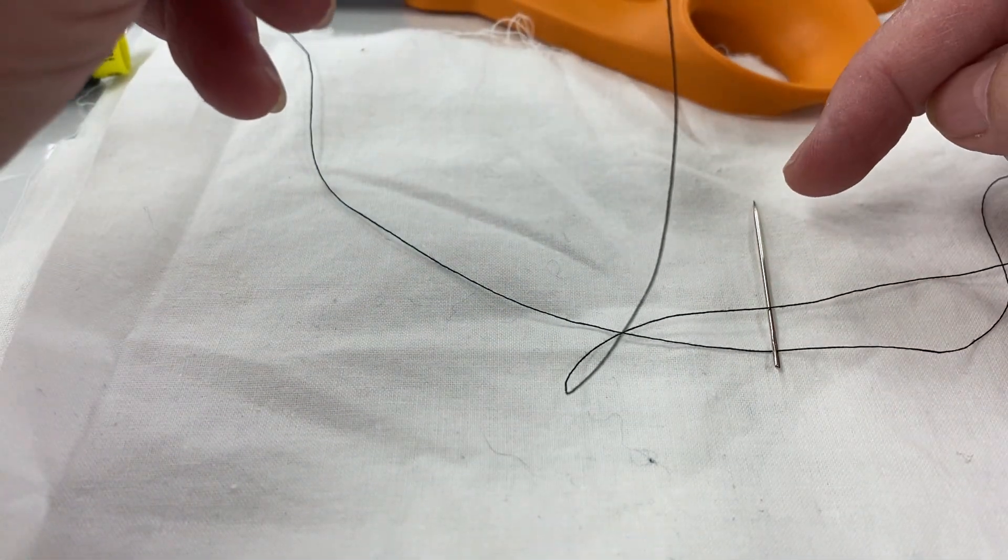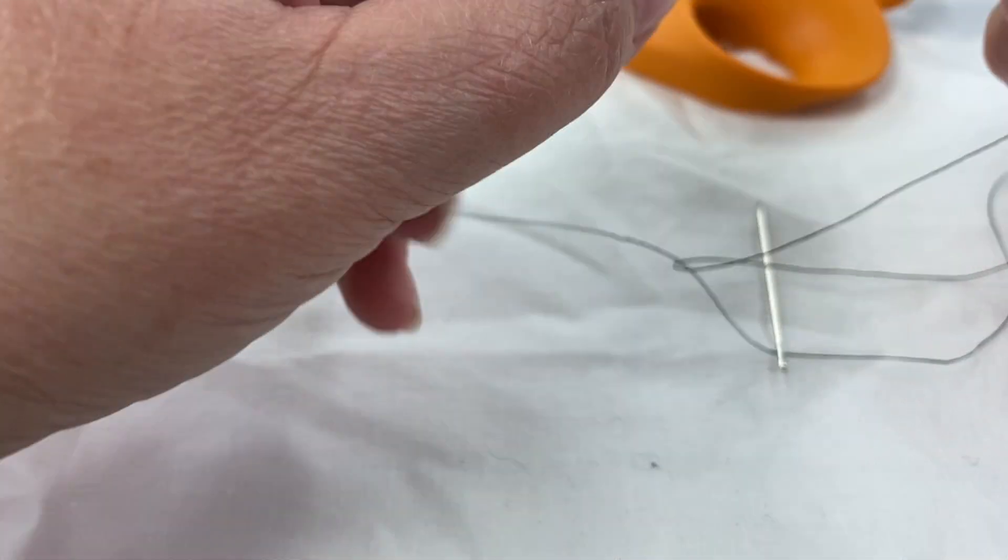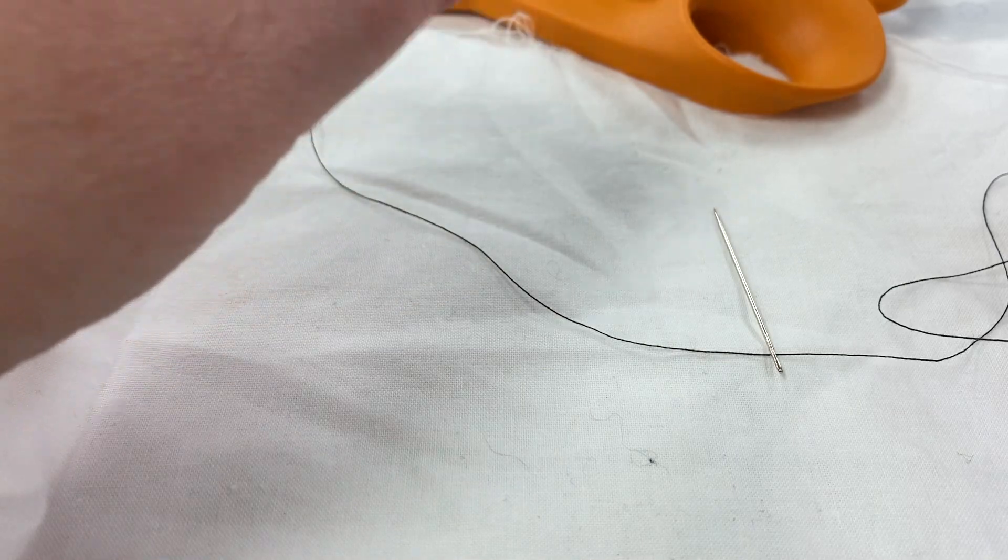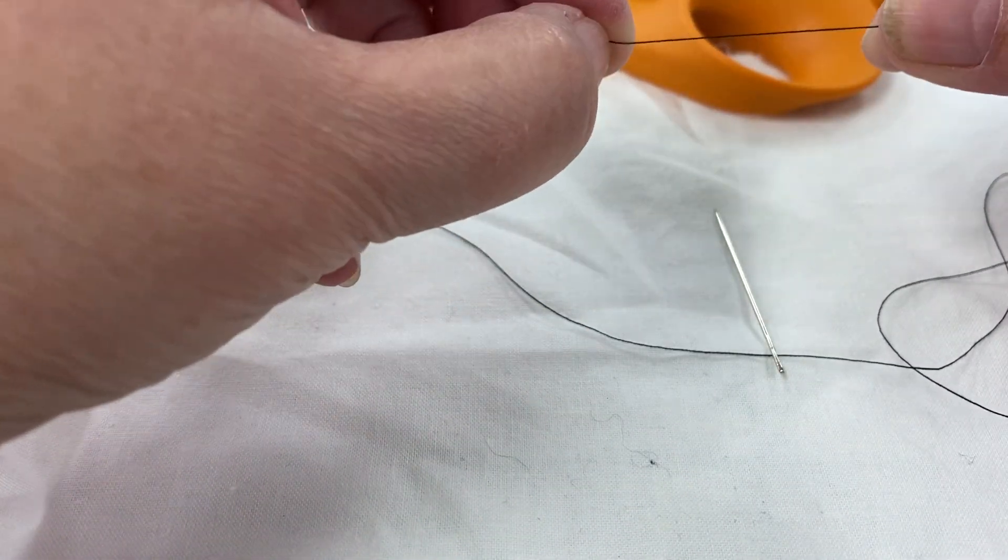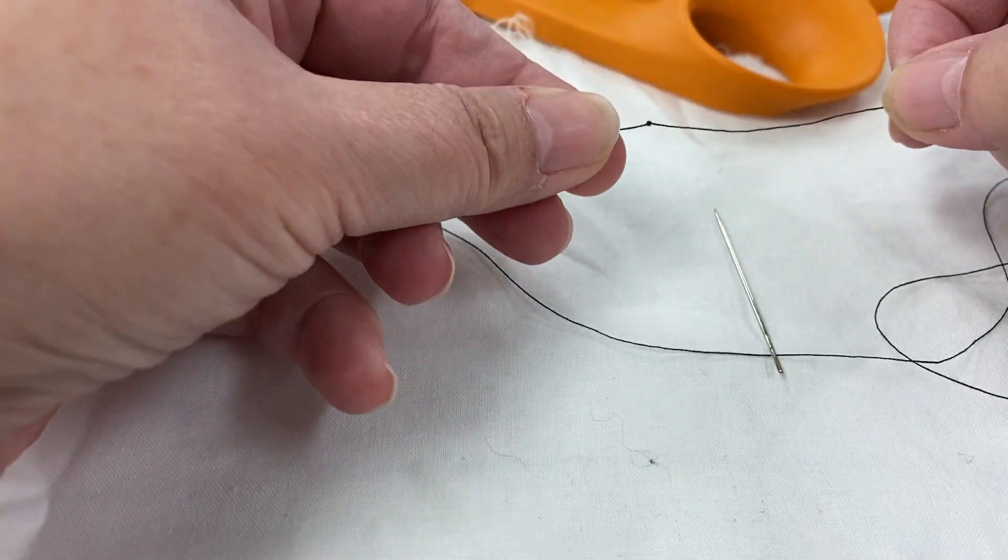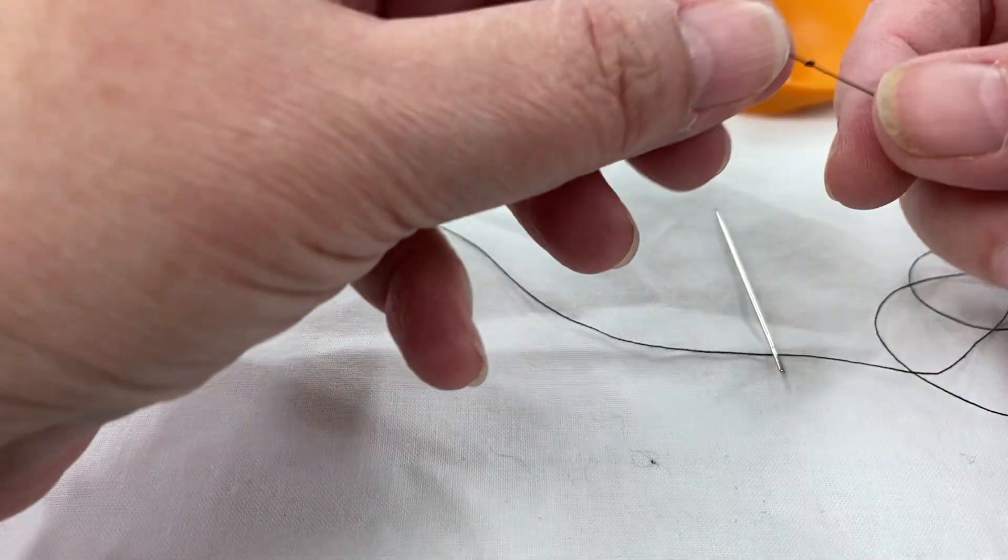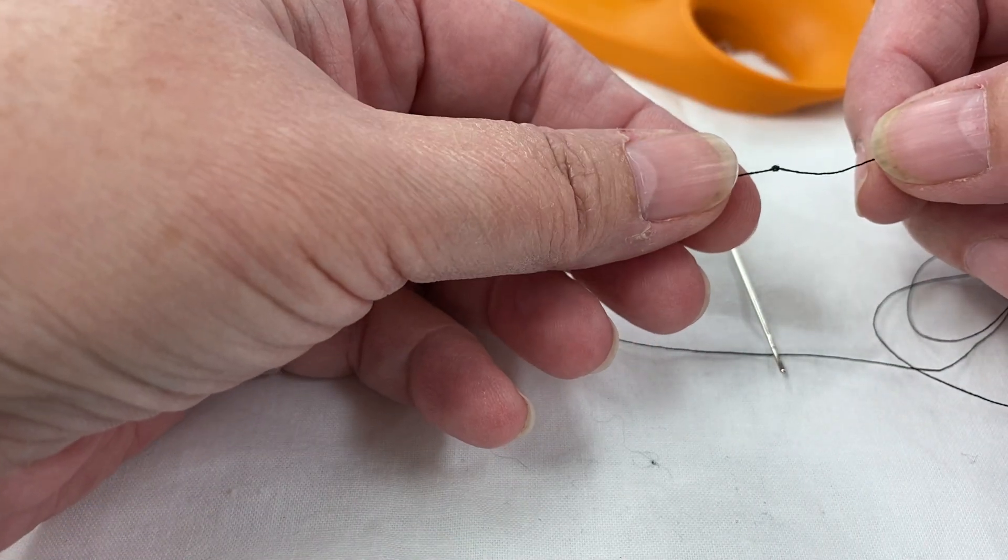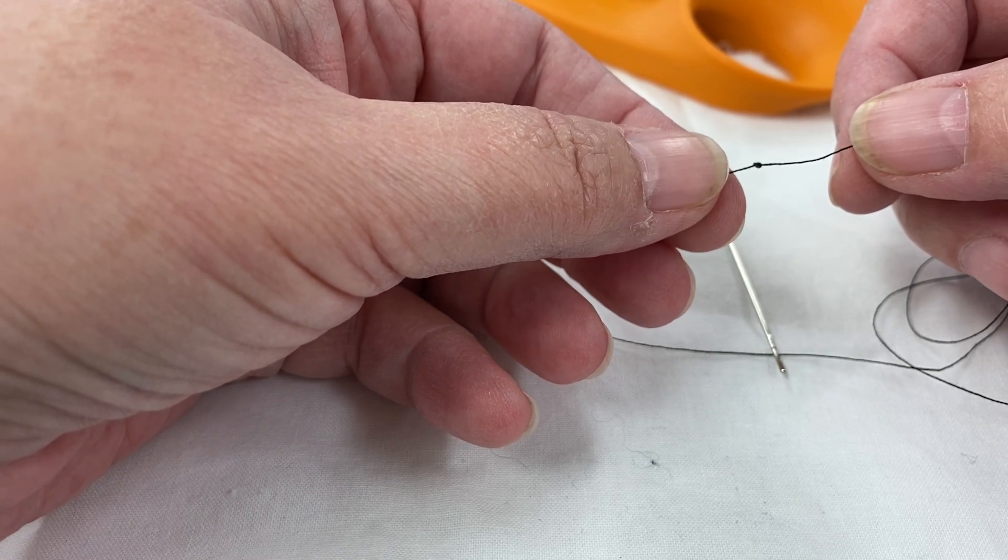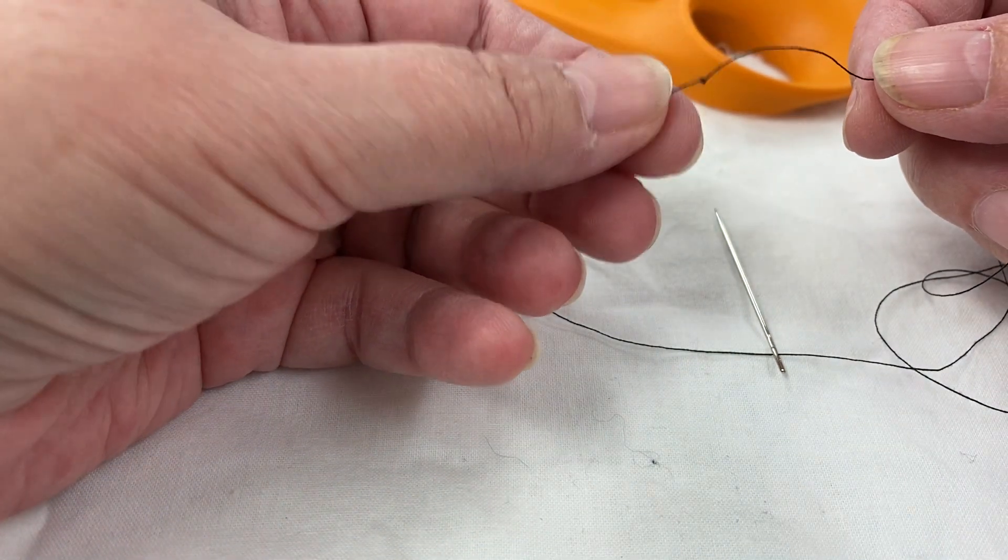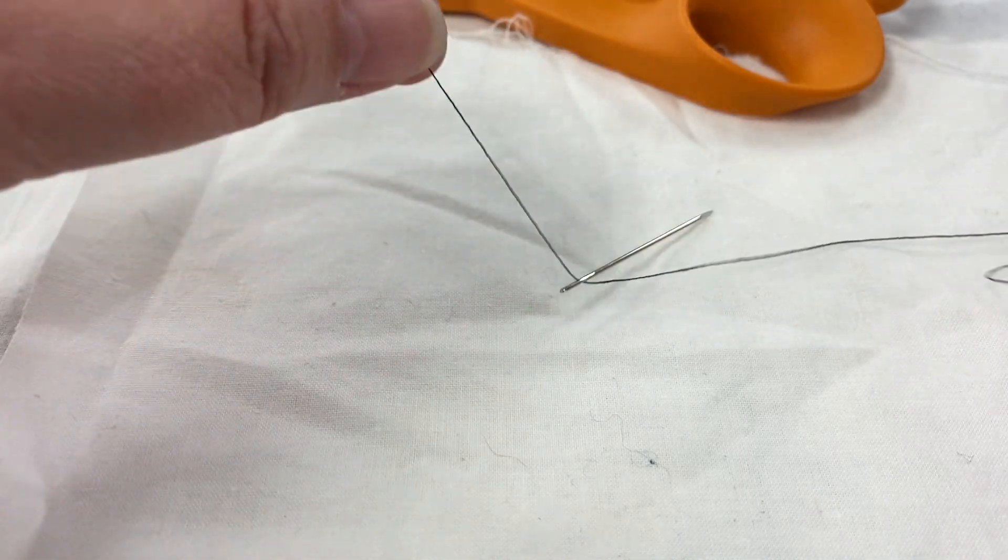There are ways to do knots that are different than this. There is a way to do where you wrap the thread around the needle and pull it through. There's a way to do it where you just kind of wrap it around and squish it together and hope that it stays. There are a lot of different things. If you have trouble, consistently can't figure out how to make a knot in your thread—first of all, there are lots of videos that will show you different ways to do the knot. I find that this is easiest for the beginner sewers because most people know how to tie a balloon. So that's the main thing.